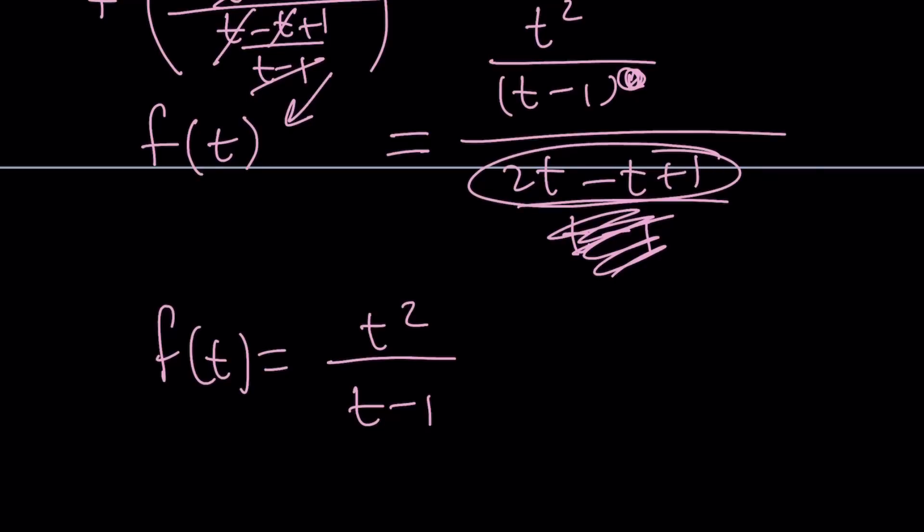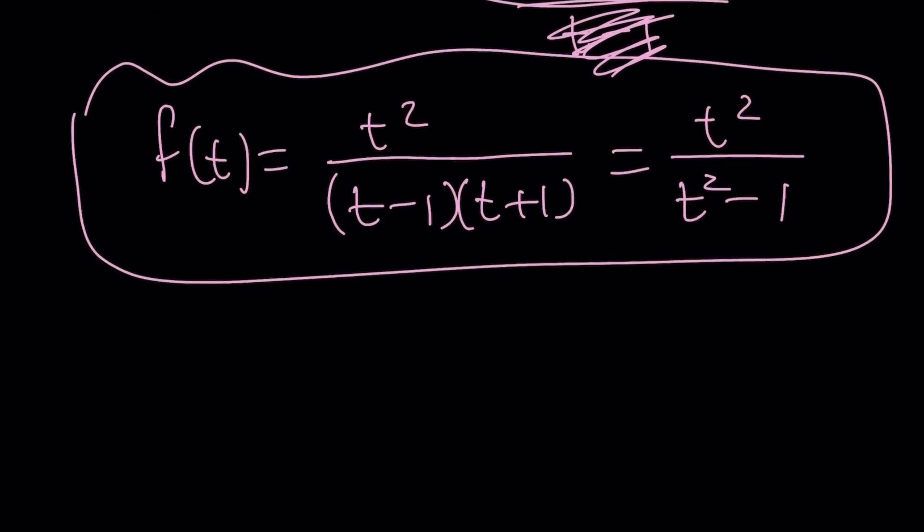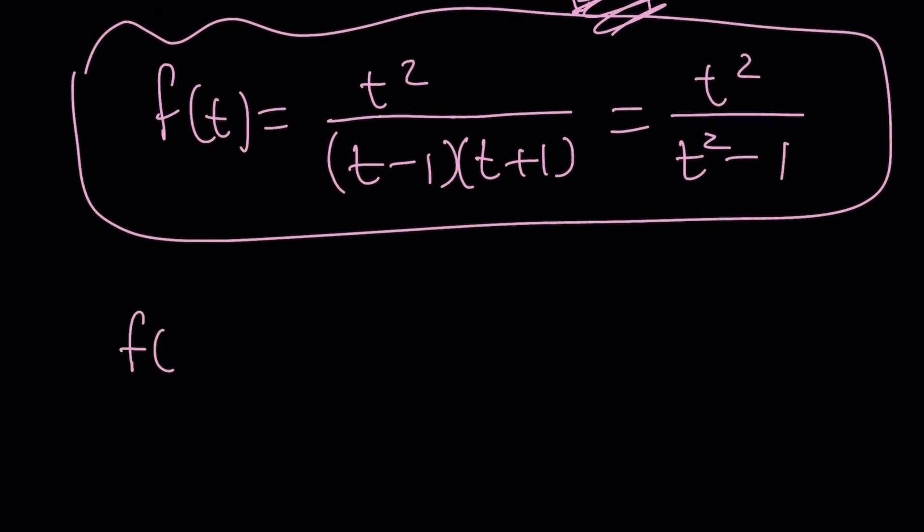But that will be kind of multiplied by the reciprocal. So, it's going to just go here as t plus 1. And, guess what? That gives us t squared over t squared minus 1. So, that is the expression for f of t. But, we would like to express it as f of x. So, replace t with x. By the way, these are dummy variables.